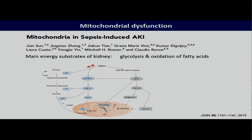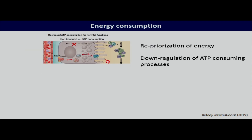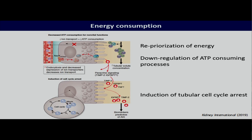If the mitochondria are not working well, then various energy processes within the kidney will be compromised, and the kidneys compensate by shifting their substrate production. And ultimately, it leads to a decrease in ATP production. They also try to compensate by down-regulating any ATP-consuming processes, and by shutting down the cells and going into cell cycle arrest to protect themselves. But ultimately, it means that the tubular cells will not be functioning as normal.